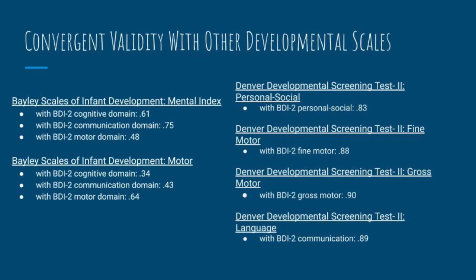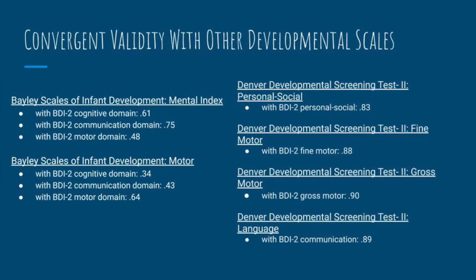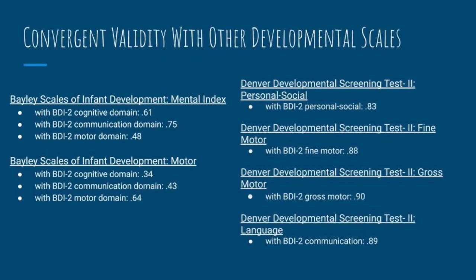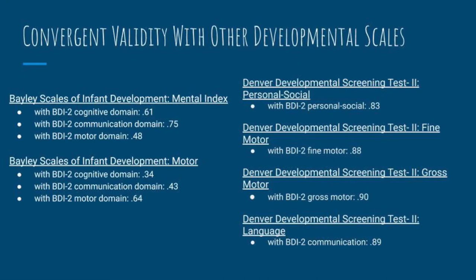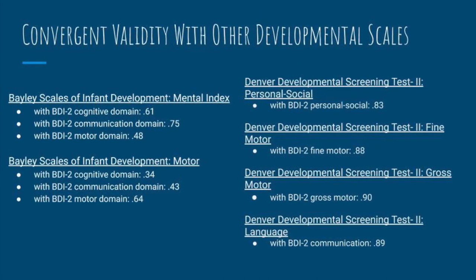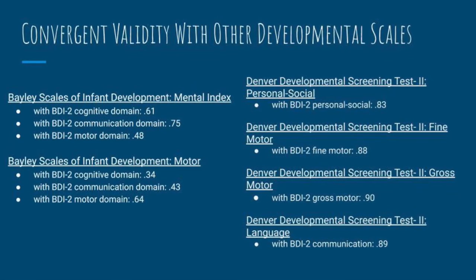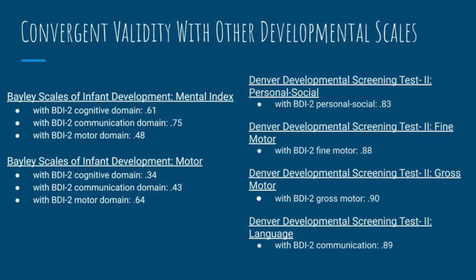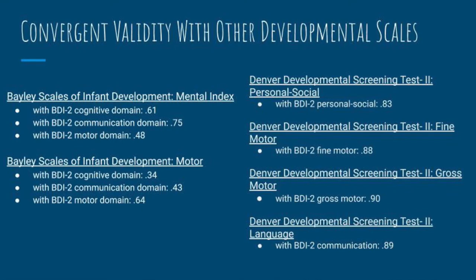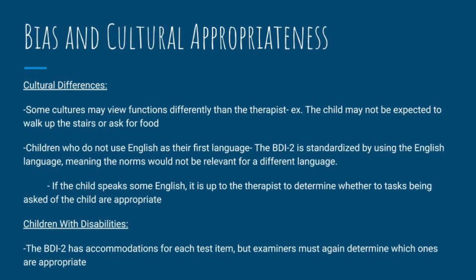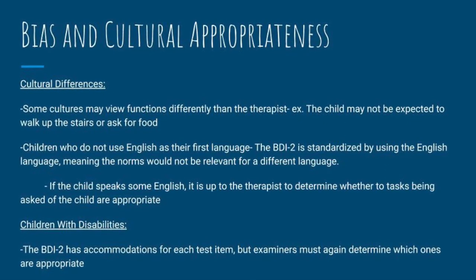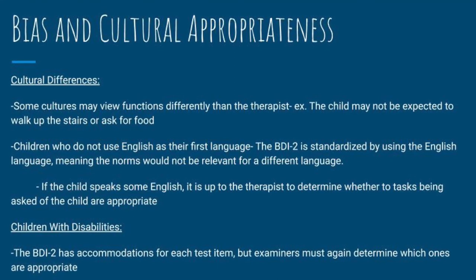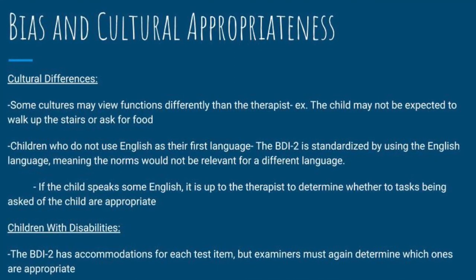For test-retest reliability, the BDI-2 total score for two-year-olds is very strong at 0.93. The examiner's manual states that most of the BDI-2 is scored using objective parameters, so not much is left for the examiner to interpret, making interscorer reliability less relevant. The manual also provides convergent validity scores comparing the BDI-2 to the Bayley Scales of Infant Development (BSID) Mental Index and Motor Domains, and the Denver Developmental Screening Test 2 (DDST-2). Strong positive correlation is seen between the BSID Mental Index and BDI-2 cognitive and communication domains. Some biases include cultures viewing functions differently, language barriers for non-English speakers, and the BDI-2 has accommodations for each test item for children with disabilities.